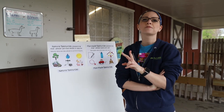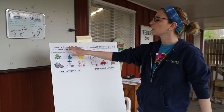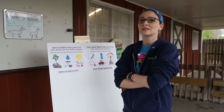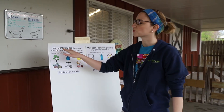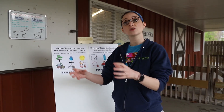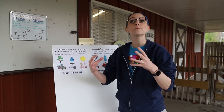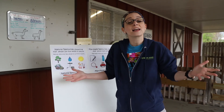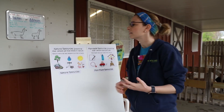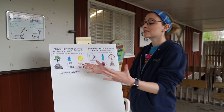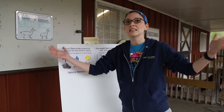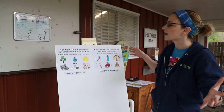Those are two kind of big words. What a resource is — it's things that humans use as a way to help us survive. And natural simply means nature. So these are things that come from nature that help us to survive. An example of a natural resource could be things that you can find in nature that grow there.